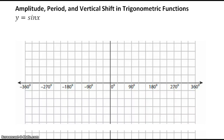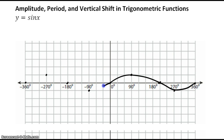We're back, looking at the amplitude, period, and vertical shift of basic trigonometric functions, sine and cosine. You'll remember from the last video that y equals sine of x looks like nice little curves. Sine starts at 0, goes up, back down, then goes to its dip, and it has a period of 360, amplitude of 1, and no vertical shift — the middle line is at 0, the x-axis.